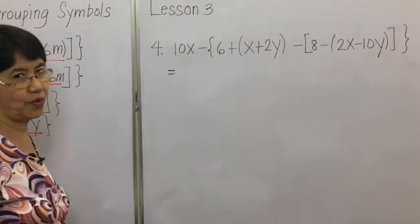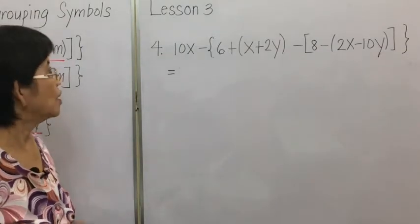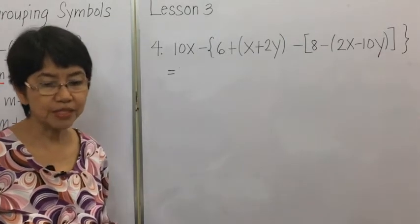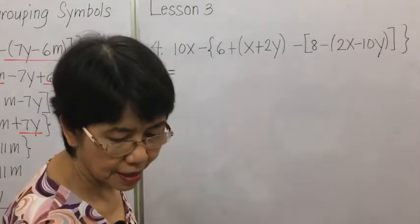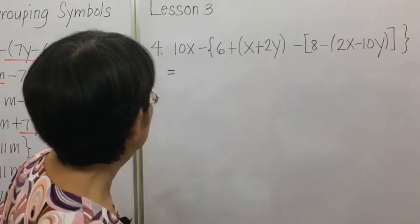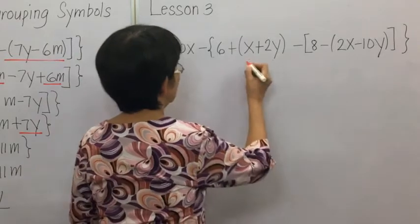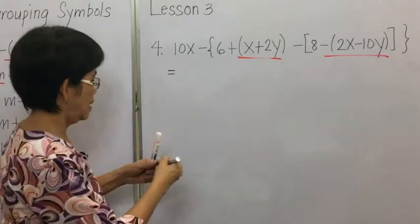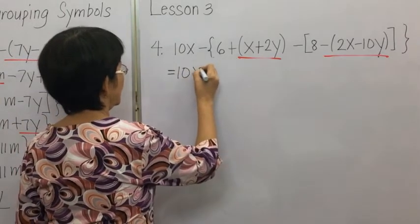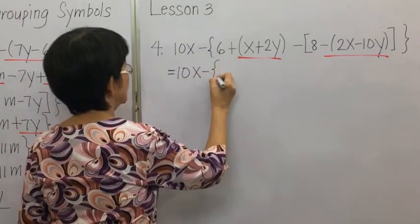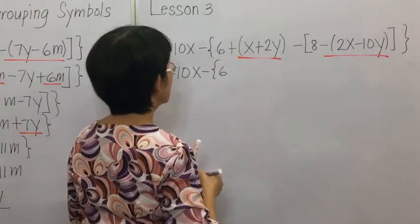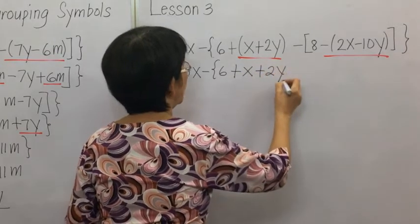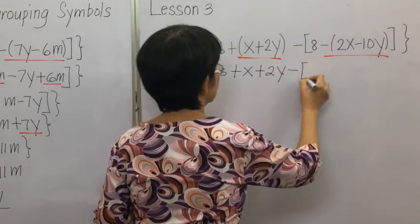In example 4, we also have three grouping symbols. We will remove the innermost grouping symbol first — copy the rest: 10X minus 6, then remove the grouping symbol to get plus X plus 2Y minus 8.